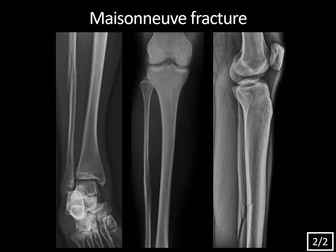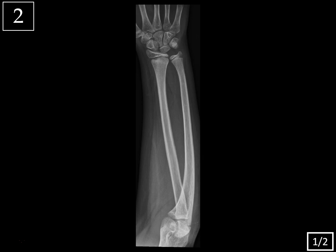What happens is you get this external rotation force to the ankle, and that extends up through the interosseous membrane, and then exits through the proximal fibular fracture. So just be aware of this when looking at an ankle x-ray and you see widening of that medial ankle mortise.